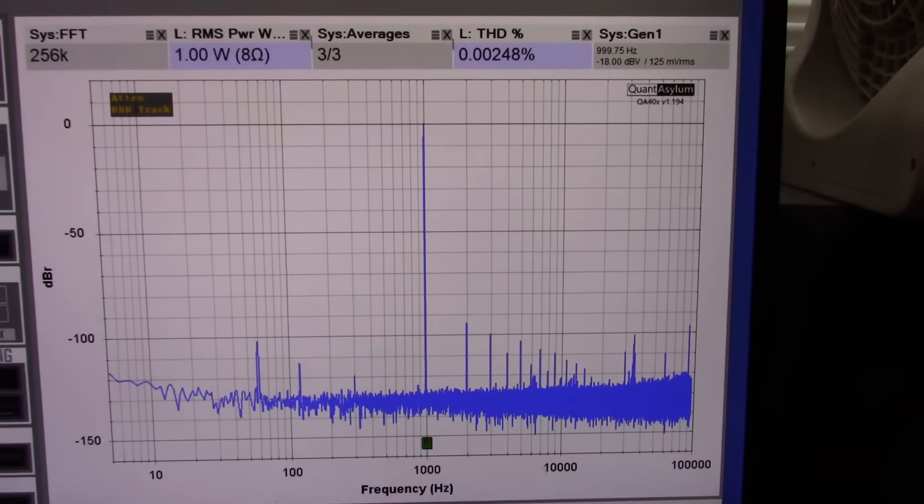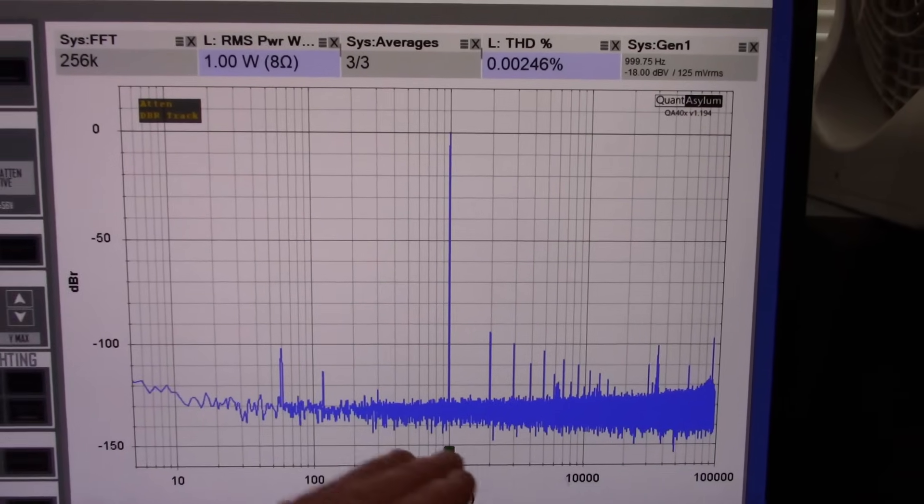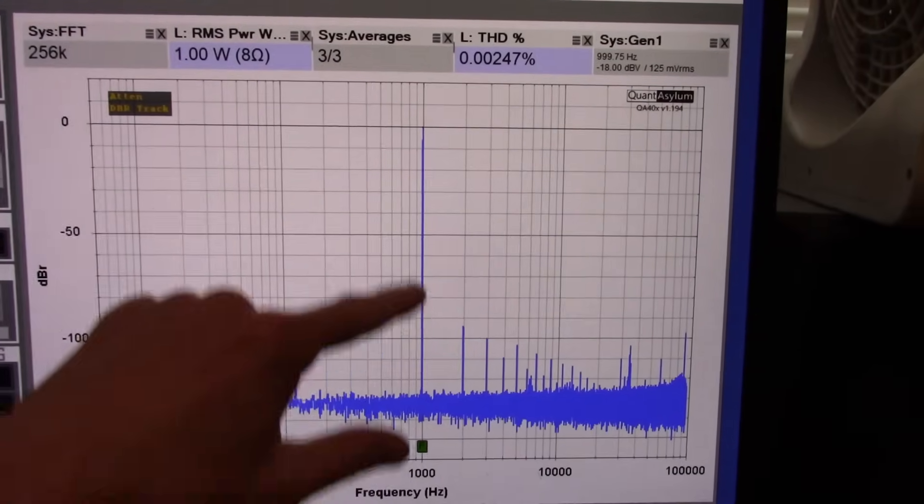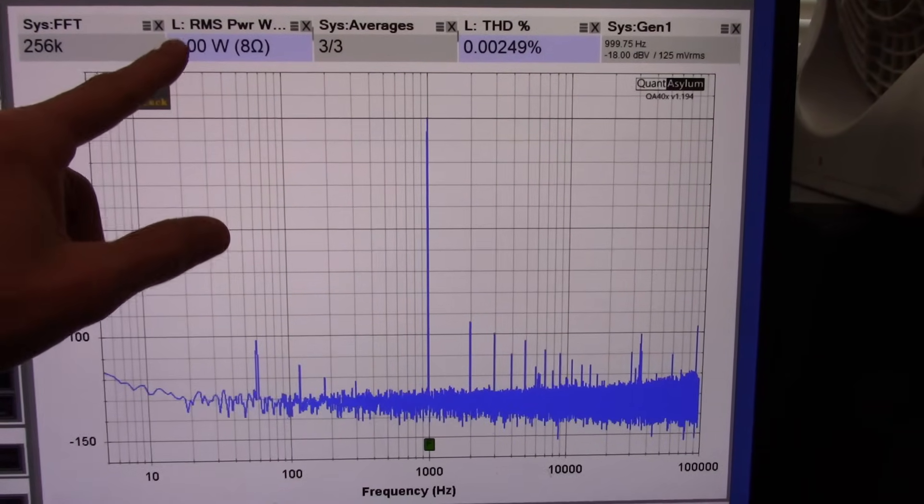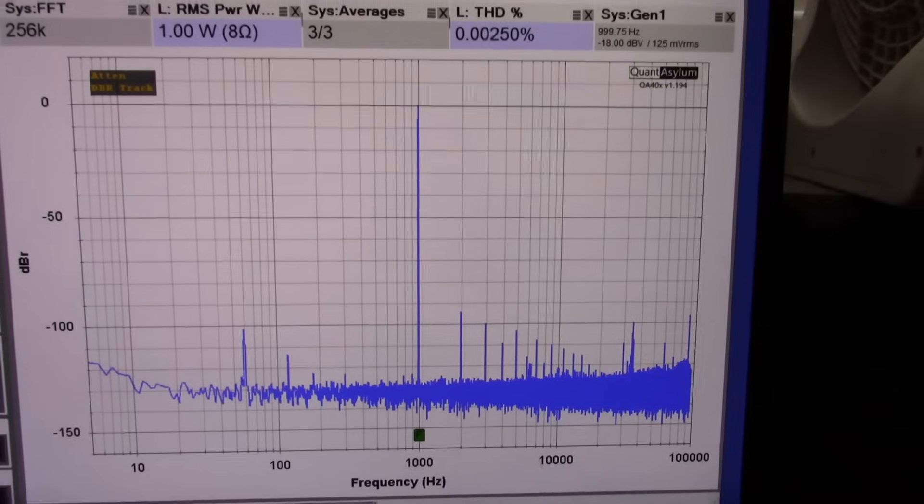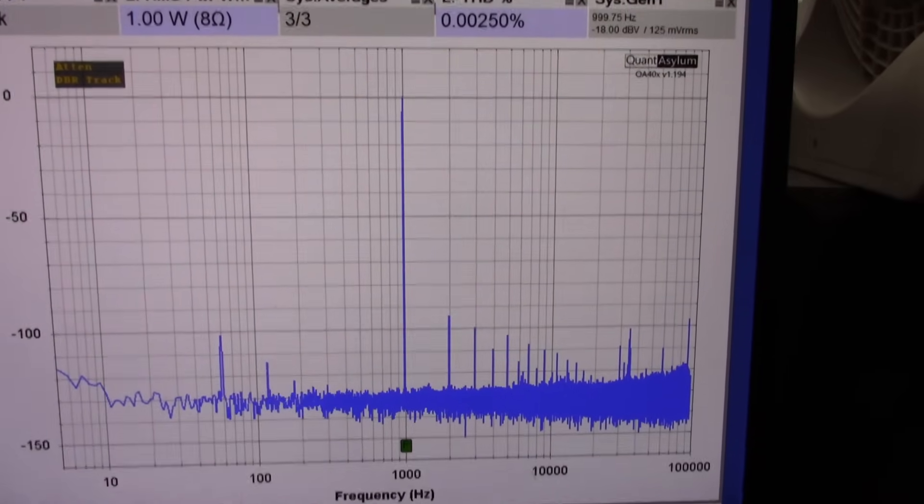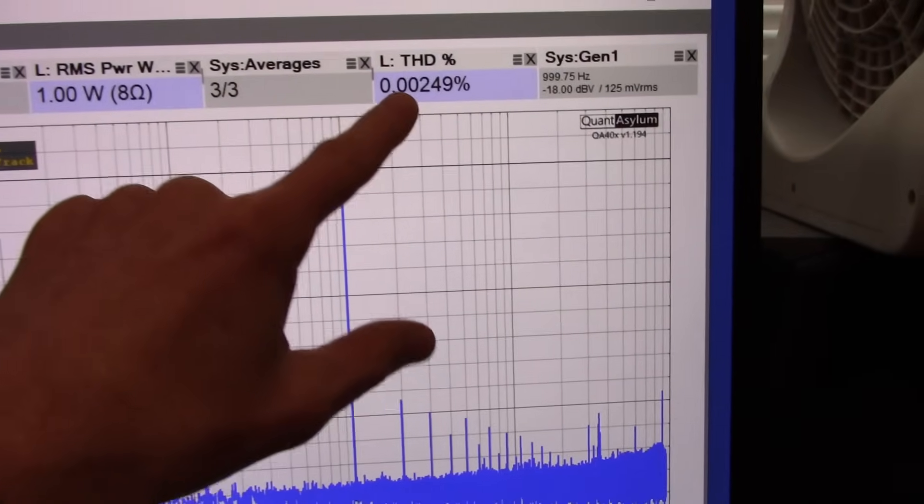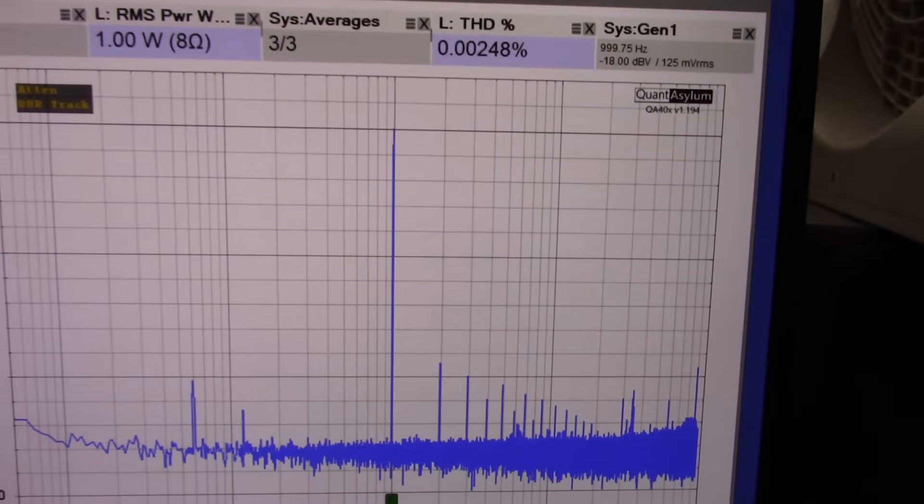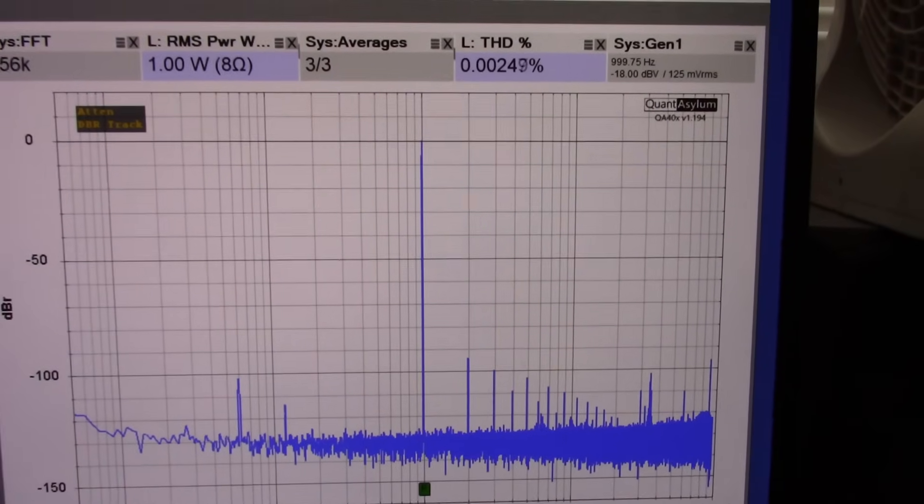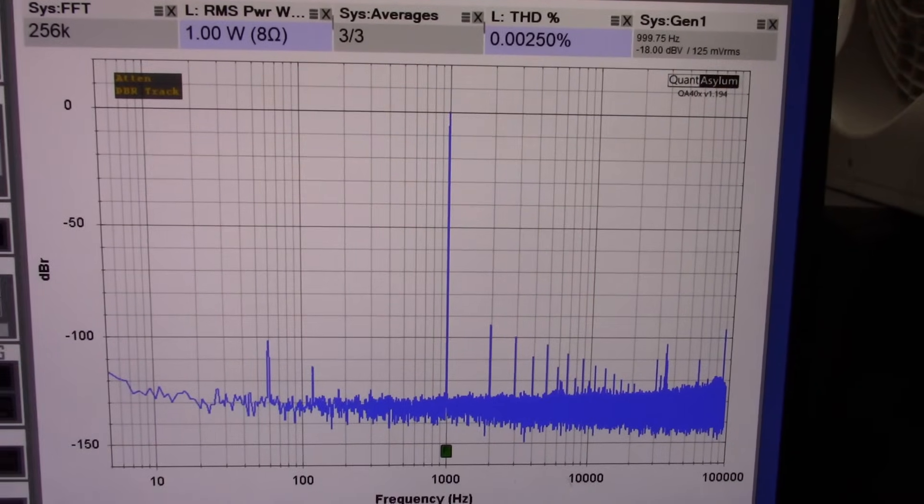Okay, what I call the kickoff measurement here where I just measure the distortion at one kilohertz, one watt, eight ohm load and counterfeit chip. 0.002%. So it's gonna be even better. Oh, we're not starting off so well.